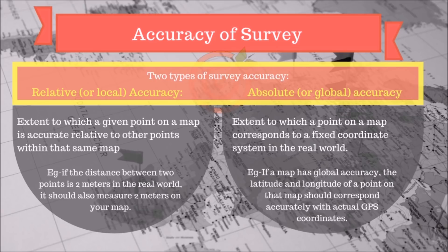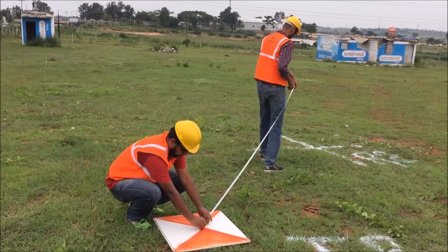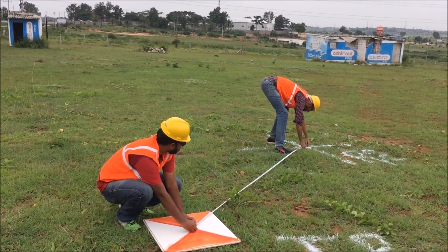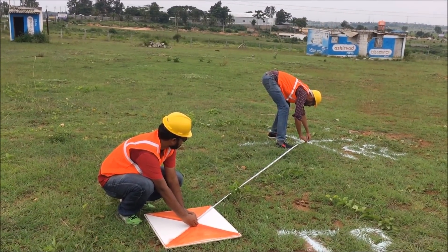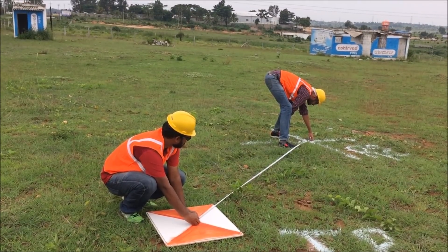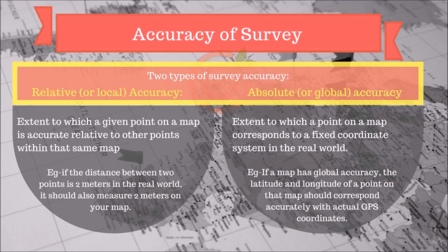An example of relative accuracy: if the distance between two points measures 2 meters in the real world, it should also measure 2 meters on your map. On the other hand, if a map has global accuracy, the latitude and longitude of a point on that map should correspond accurately with actual GPS points.